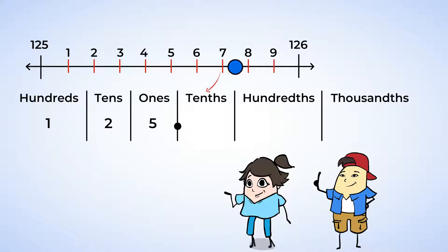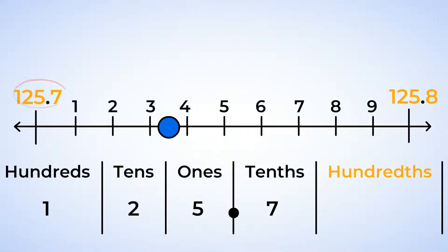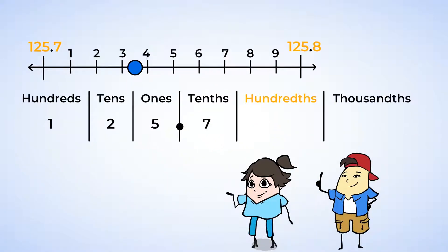So it looks like this number is between seven tenths and eight tenths. Well, let's zoom again and we can better see the next place value, the hundredths. The marks in between 125.7 and 125.8 represent hundredths. And the dot is between three hundredths and four hundredths. Let's zoom in again and see thousandths.